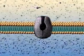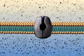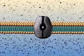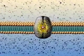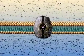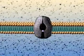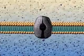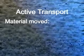However, there are materials that need to be moved against their concentration gradient. This process requires energy, ATP, and protein carriers that are found in the plasma membrane. Defined, active transport is material moved from a low concentration to a high concentration through a membrane using a protein carrier.